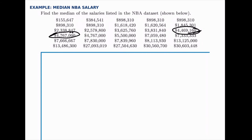If we had an odd number of data points — say 29 — we would find the single middle value and that would be our median. We wouldn't need to find any average. But any time there's an even number, there will be two values in the middle, so we need to find whatever is halfway between those two.